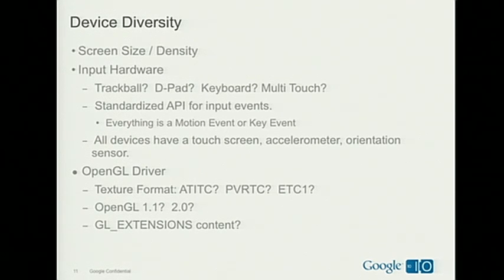Input hardware is a little trickier because some phones have a trackball, some have a D-pad, some have a keyboard, some have multi-touch screens, some don't, and some have an optical trackpad. For a game, a lot of playability is going to be based on how well the user can control it. Fortunately, the API does a good job of standardizing all these different input types into two types of events: motion events and key events. And you can be pretty much guaranteed that all devices will have a touch screen, accelerometer, and orientation sensors — so if your game only relies on those, it'll run everywhere without modification.